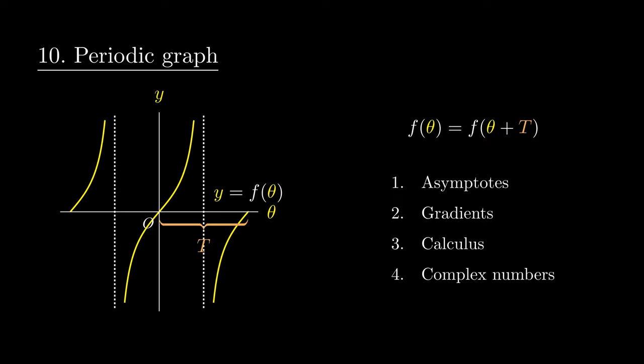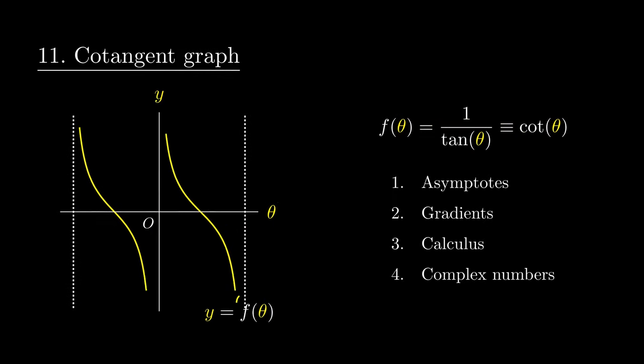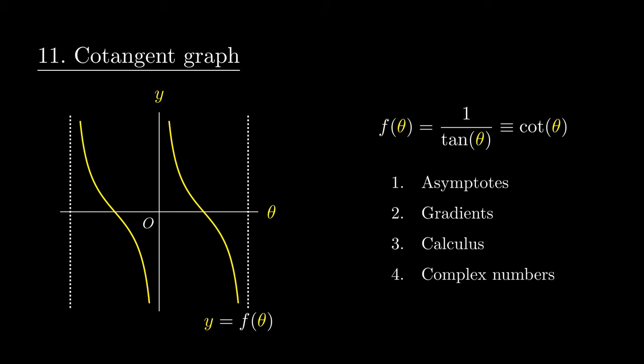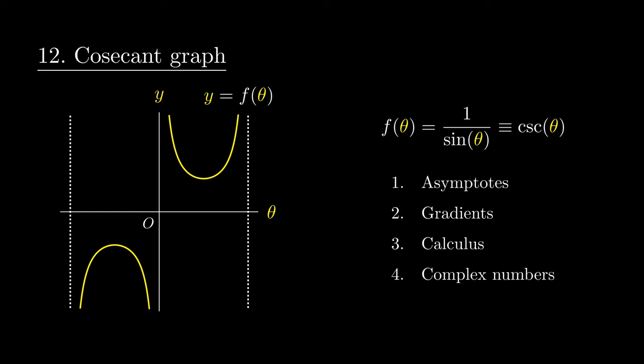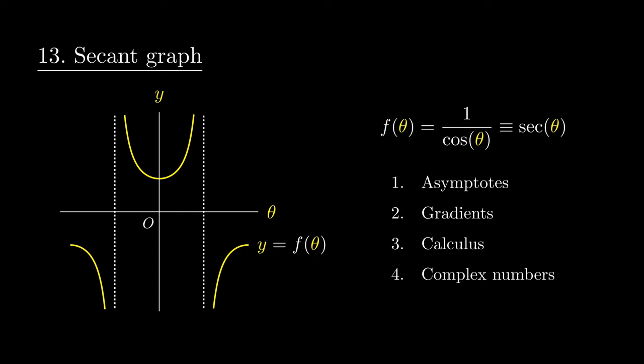These will include the reciprocal trigonometric functions, such as the cotangent graph, as well as the reciprocal of the sine graph known as the cosecant graph. Finally, we have the reciprocal of the cosine function known as the secant graph, which is a shifted version of the cosecant graph.